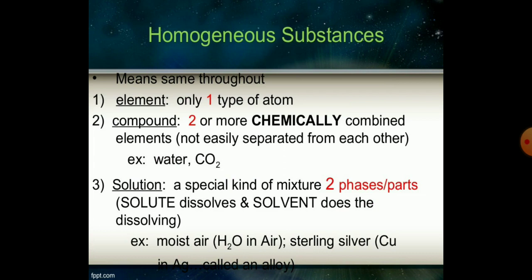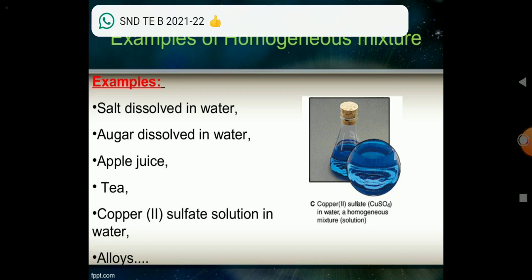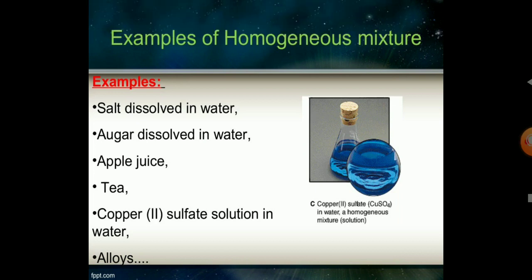Examples of compounds include water and carbon dioxide. Solutions are a special kind of mixture of two phases — the solute, which dissolves, and the solvent, which does the dissolving. Moist air and sterling silver are two examples of solutions. Salt dissolved in water is an example of a homogeneous mixture.